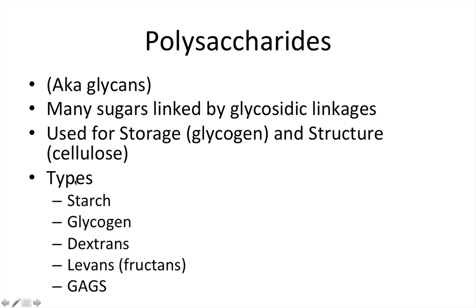The main types I'll be focusing on are starch, glycogen, dextrans, levans (also known as fructans), and GAGs. Dextrans and levans show up in a lot of plaque-type questions because they're a main component of plaque.